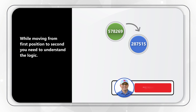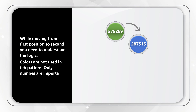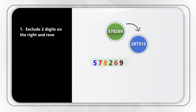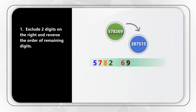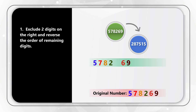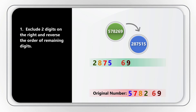The colors are not used in the pattern — they are there just to deceive you. Only numbers are important. To complete the transformational pattern, we need to do it in three steps. Step 1: exclude two digits on the right and reverse the order of the remaining digits. For example, the original number is 5782, then two digits 69. We separate 69, reverse the order, and the number becomes 2875. Then we do the remaining calculations with the numbers 6 and 9.